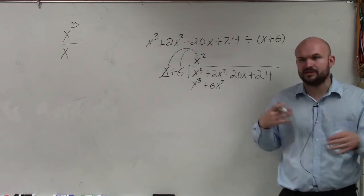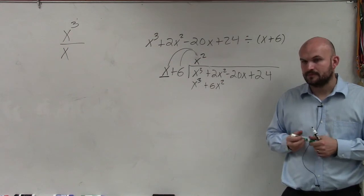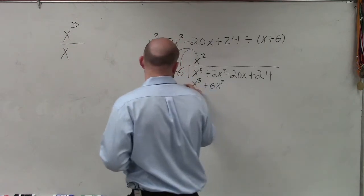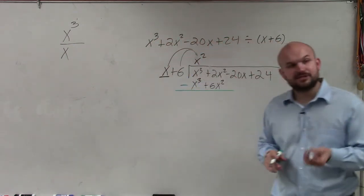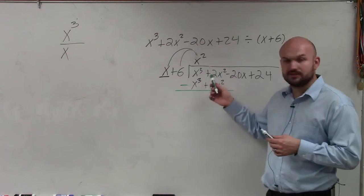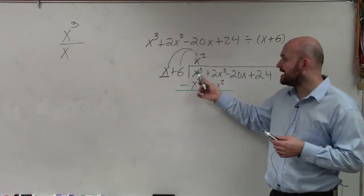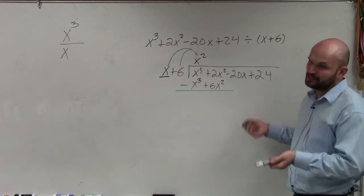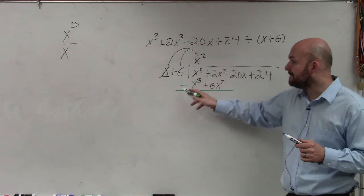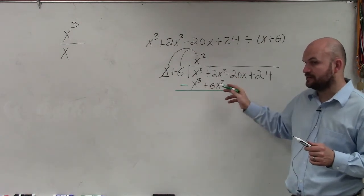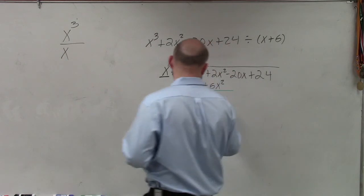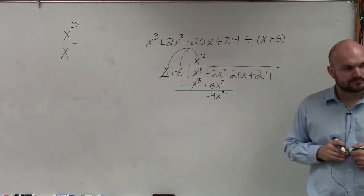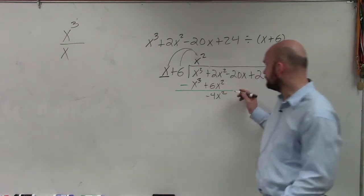Does everybody see how I got to this point? Because this is the same routine we're just going to repeat over and over. Now, the next thing we do is we subtract the rows. I want to make sure when we're subtracting the rows, every single term we're going to use the subtraction sign. So x cubed minus x cubed is 0. 2x squared minus 6x squared is going to be a negative 4x squared. The next thing you can do now is bring down the rest of your terms.